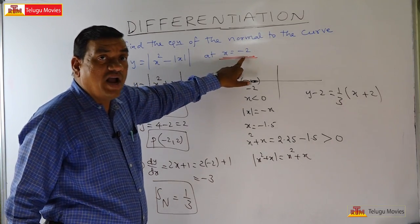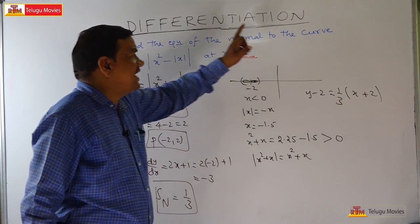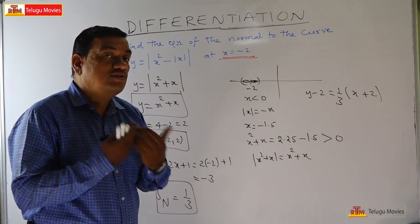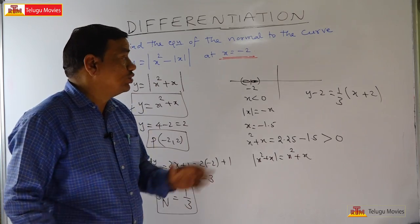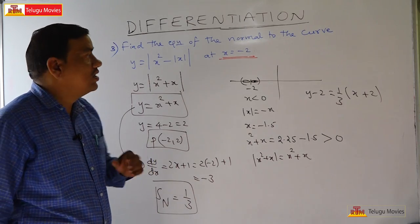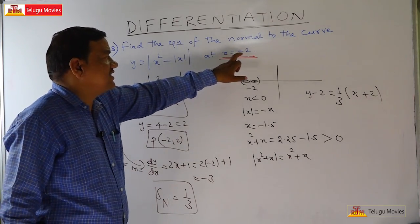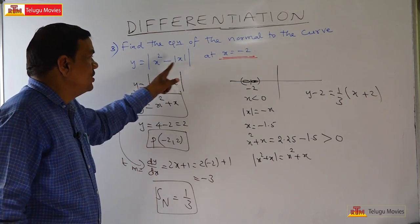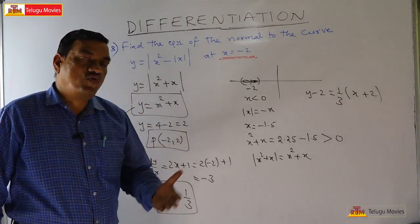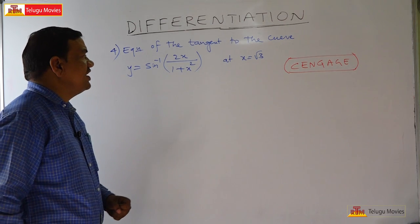The equation of the normal using y - y₁ = m(x - x₁) with point (-2, 2) and slope 1/3: y - 2 = (1/3)(x + 2). The key insight is correctly identifying the neighbourhood of the given point to remove the modulus signs properly.